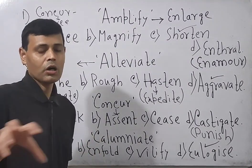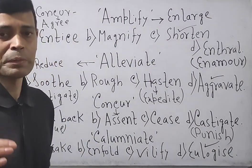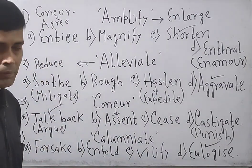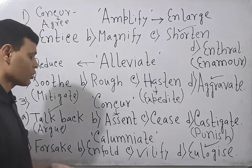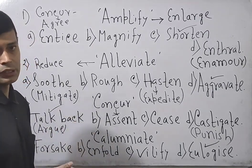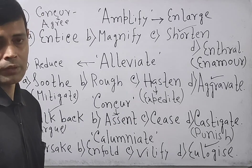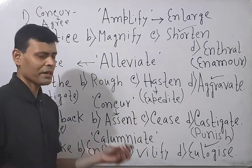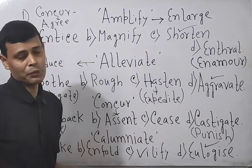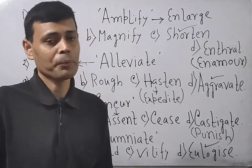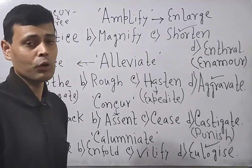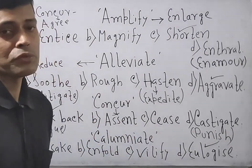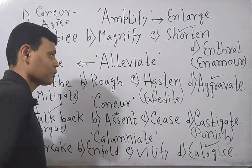Calumniate means vilify or blame or asperse. Now look through the options. Forsake means give up or abandon or relinquish. Enfold means hug or embrace. Vilify, calumniate all are equal. But eulogize is a word that suggests admiration or praise or approbation. So calumniate, eulogize both are antonyms to each other. That's why the answer is eulogize.